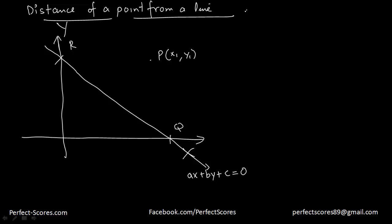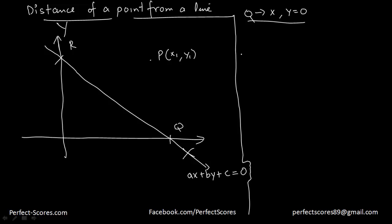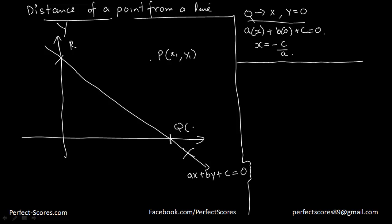So what will be point Q? Point Q would be the value of x when y is 0. If you substitute y equals 0 in the equation, you get a times x plus c equals 0, which means the value of x equals negative c by a. So the coordinates of Q are negative c by a comma 0, because the y coordinate is 0.